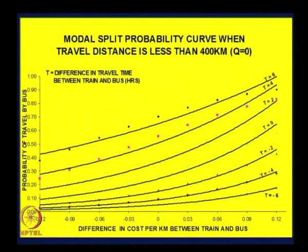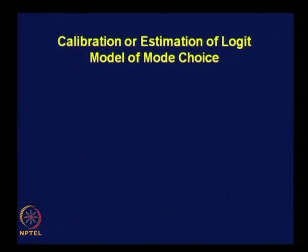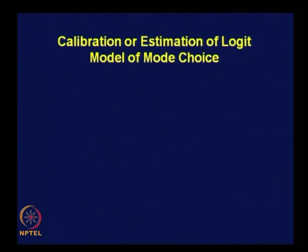With this understanding, let us try to understand what we mean in general by calibration of the logit model of mode choice — for any situation, whether a binary choice or a multiple choice case with more than two alternatives. In general, calibration of the logit model is nothing but estimation of the model of mode choice — estimating the coefficients. That is what we do through calibration.